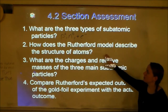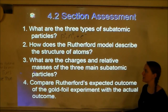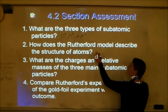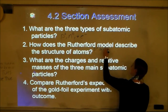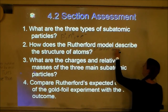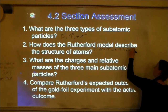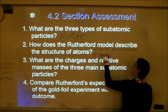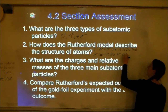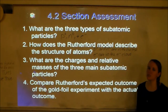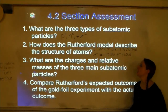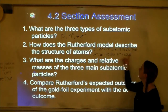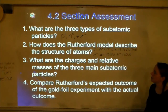How does the Rutherford model describe the structure of the atom? It has the protons and neutrons in the nucleus and the electrons in the electron cloud. Protons (P+) and neutrons (N⁰) are in the nucleus; electrons (E⁻) are in the electron cloud.